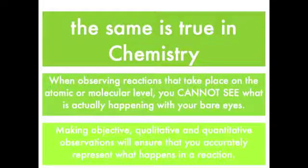The same is true in chemistry. When observing reactions that take place on the atomic or molecular level, you cannot see what is actually happening with your bare eyes. Making objective, qualitative, and quantitative observations will ensure that you accurately represent what happens in a reaction. Do not guess what you think is happening. Instead, tell us exactly what you see.